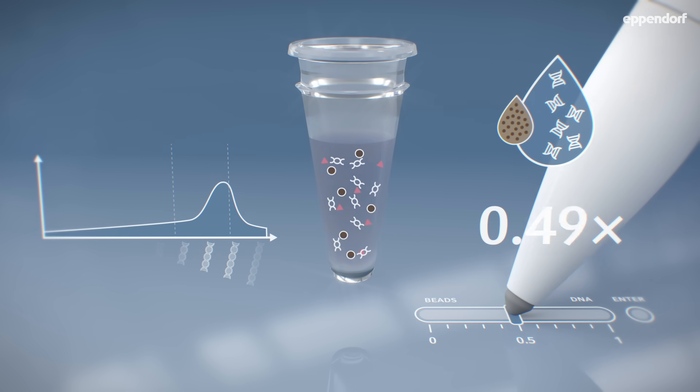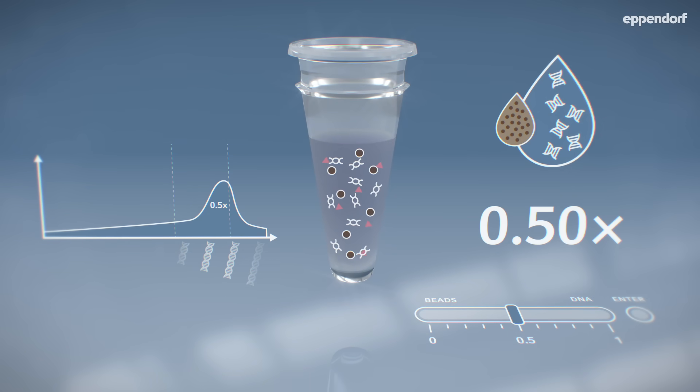If we start at a 0.5x ratio of beads to DNA, the larger fragments are selected for, while smaller fragments will be removed during later wash steps. Here we lose a lot of the total fragments.